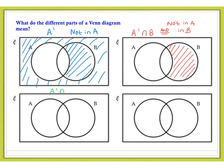A dash intersection B dash. Items that are not in A and not in B at the same time. So, that refers to everything in this portion of the Venn diagram.